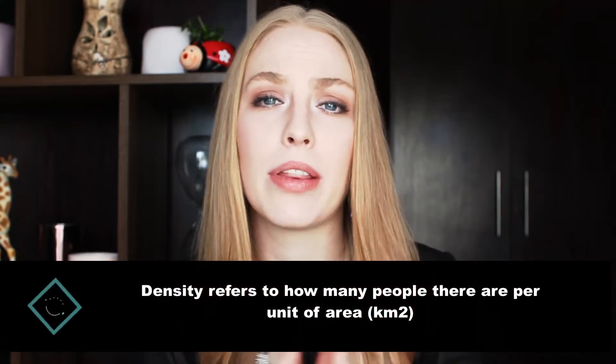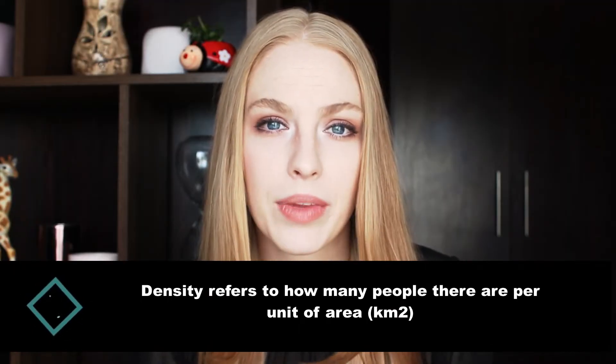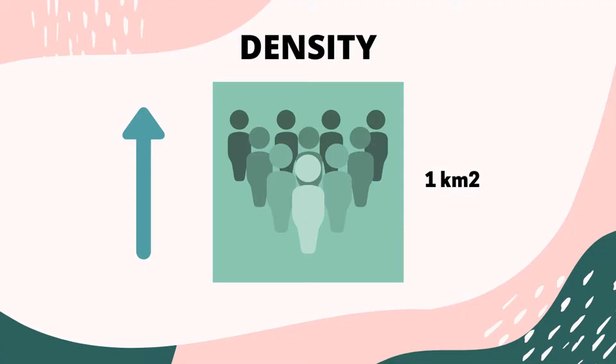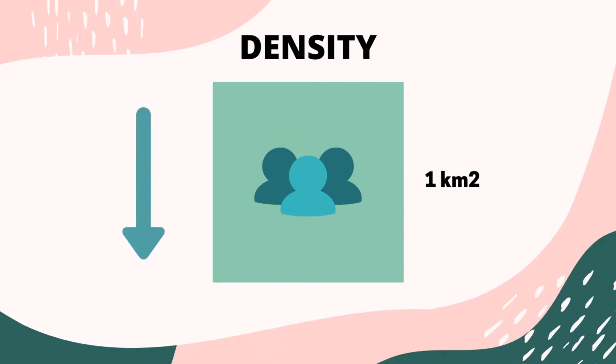Population density, on the other hand, looks at how many people there are per unit of area. For the rest of this video we will be using square kilometres as our unit of measurement. With population density we are basically looking at how many people there are within one small area. The more people there are in that defined area, the higher the population density; the fewer people, the lower the population density.